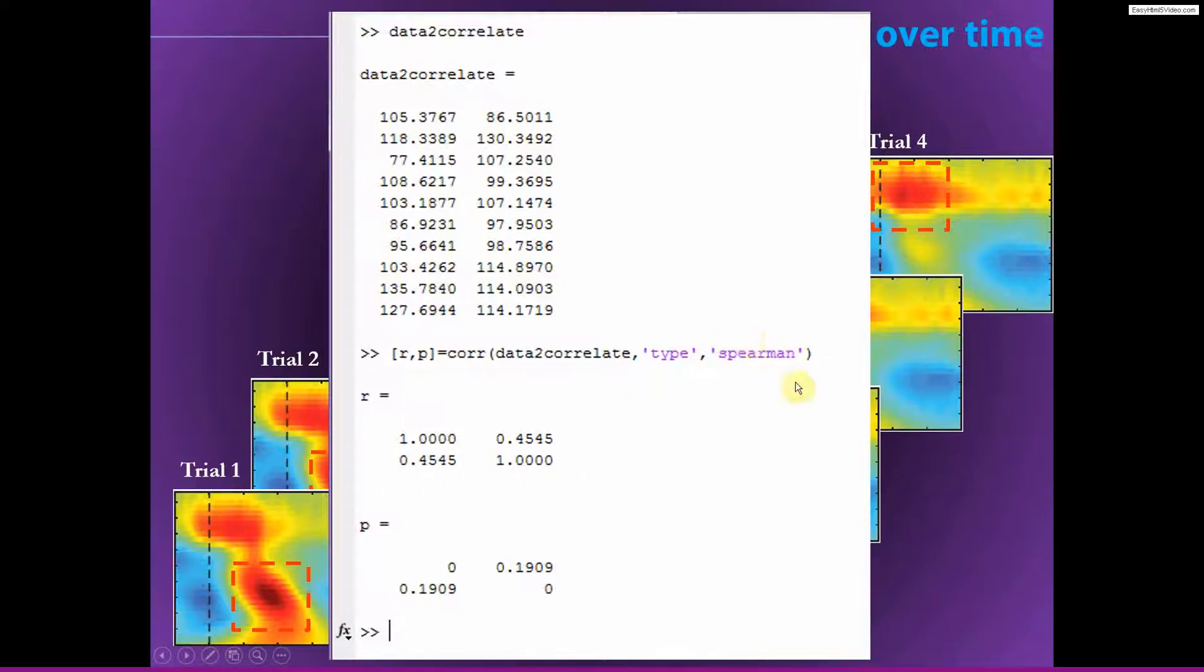It's a good idea when you do this to use a Spearman correlation, because time-frequency power data are generally non-normally distributed, particularly at the single trial level, because you're not going to be doing any kind of normalization to account for 1 over f fluctuations. So it would be good to use a Spearman correlation so that the results are not going to be overly influenced by outliers or extreme values.